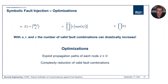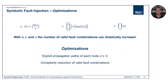We came up with two optimization strategies. The first exploits propagation paths: we do not re-evaluate the entire DAG after every fault injection, but only the nodes in the propagation path of the faulted node. The second is called complexity reduction, where we reduce the initial set Lambda to end up with a lower number of faults that need to be evaluated. More details can be found in the paper.